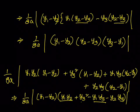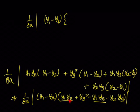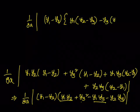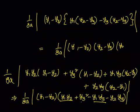Now we can take y2 minus y3 common. The next step will be 1 by 8a, we have y1 minus y2 common, then taking y1 and y3: we take y2 minus y3 common and write y1 into y2 minus y3, minus y3 into y2 minus y3, which is nothing but equal to 1 by 8a into y1 minus y2 into y2 minus y3 into y3 minus y1, because we are taking the absolute value.